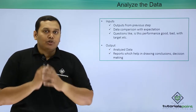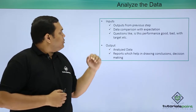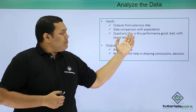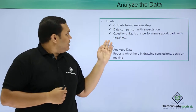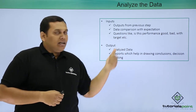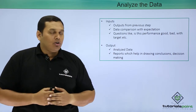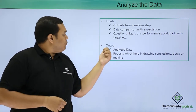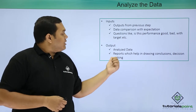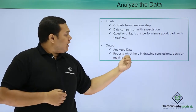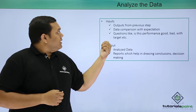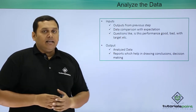Step 5 is analyzing the data. The inputs are the outputs from processing the data and data comparison with expectations, with questions such as: is this performance good or bad, and is the target performance achieved or not? The outputs are analyzed data and reports that help in drawing conclusions for decision makers.